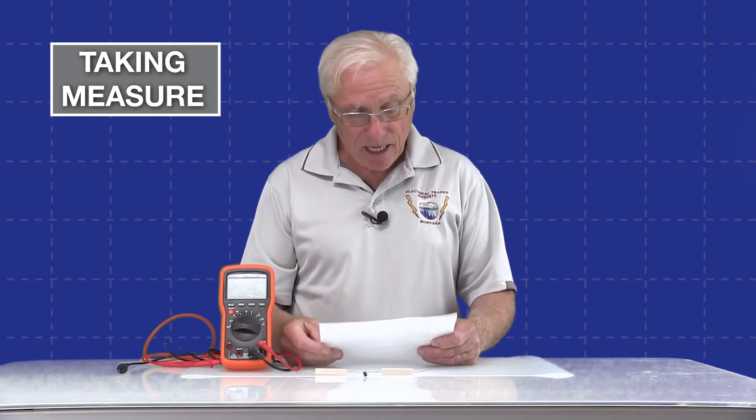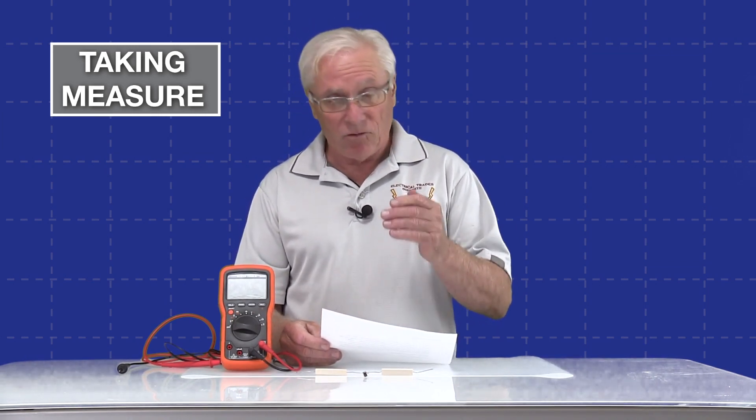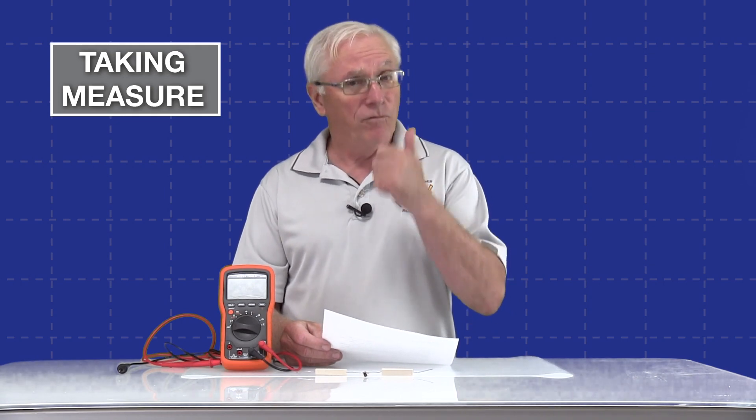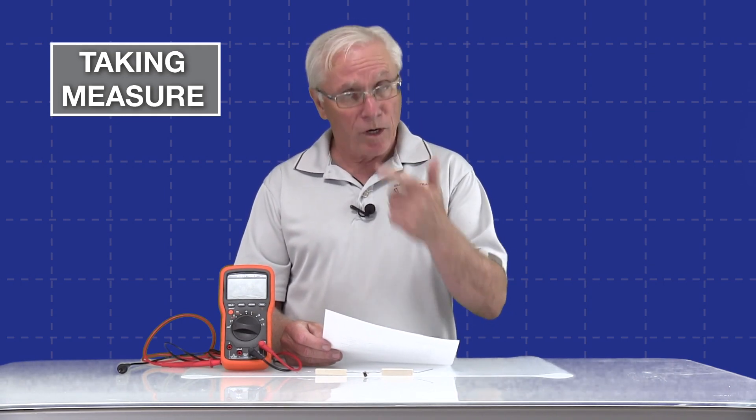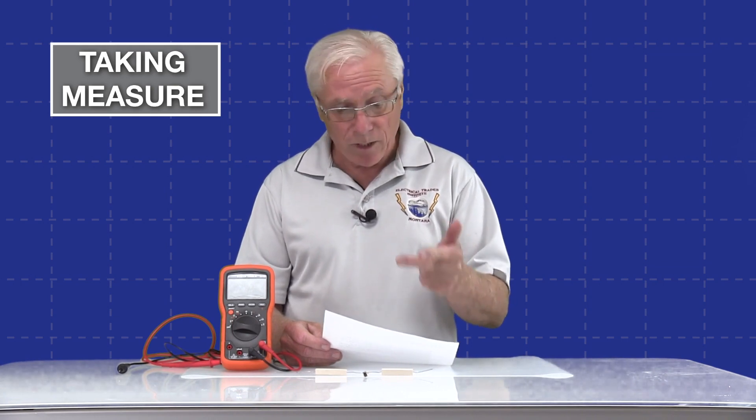The way I say it is this: it blanks out part of the measurement you don't want to see. It's a very interesting feature and you're able to use it on either voltage measurement mode, current measurement mode, or resistance measurement mode.